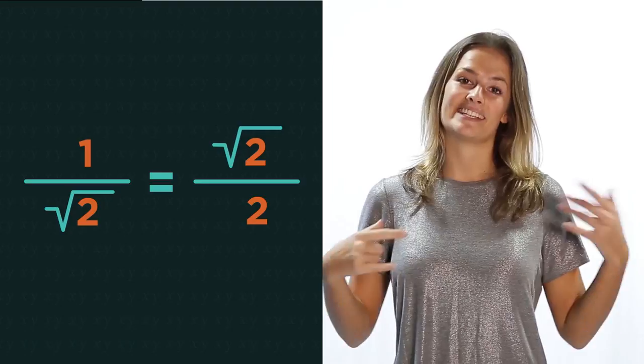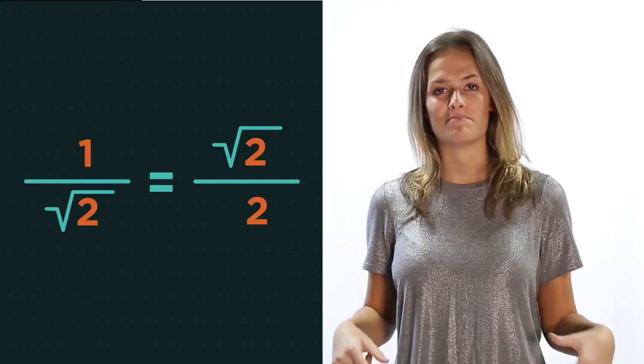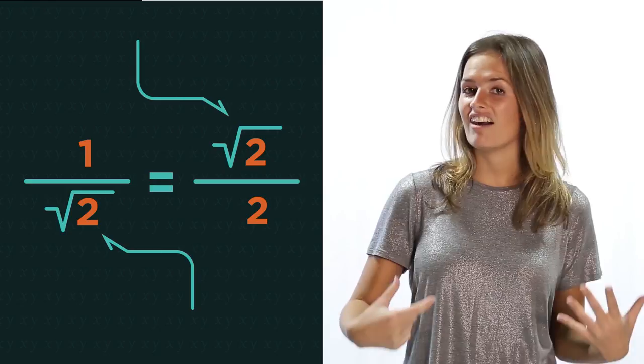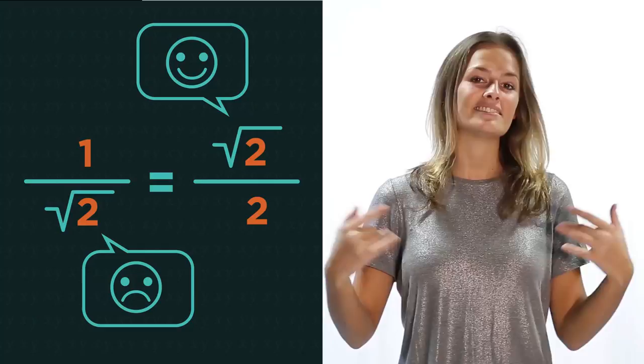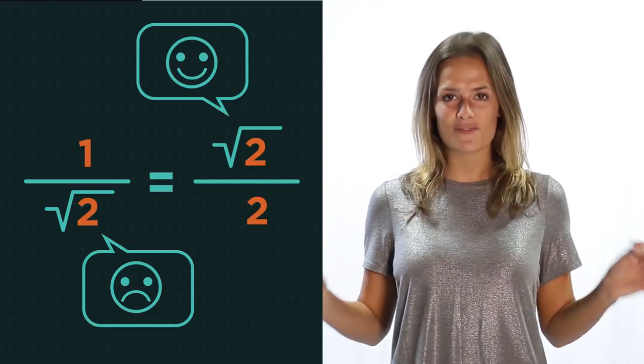For a surd to be in its simplest form, the denominator cannot be irrational. It can't have a square root in its denominator. It's not wrong, it's just not considered the simplest form.